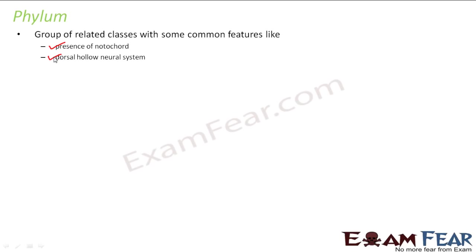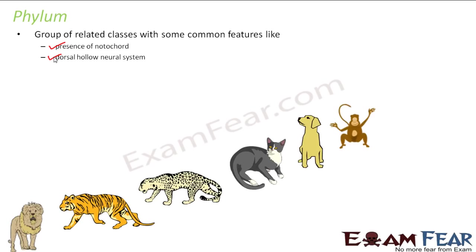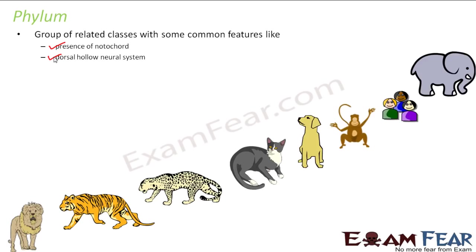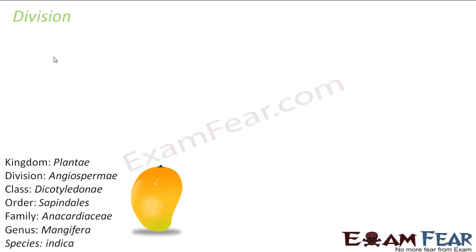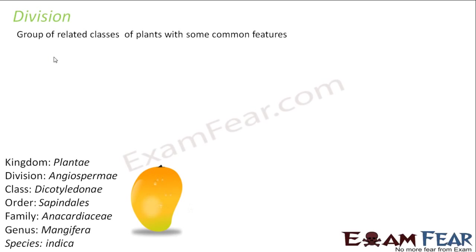The word phylum is used only for animals — we do not use the term phylum for plants. For plants we use a different term called division. When I talk about phylum, we will consider the same example again, but now along with these organisms we can include other organisms like fishes, reptiles like lizards, amphibians, or snakes. They can also be included now, because even though they don't all fall under class Mammalia, they all fall under the same phylum. Phylum and division mean the same thing — phylum is used for animals and division is used for plants.